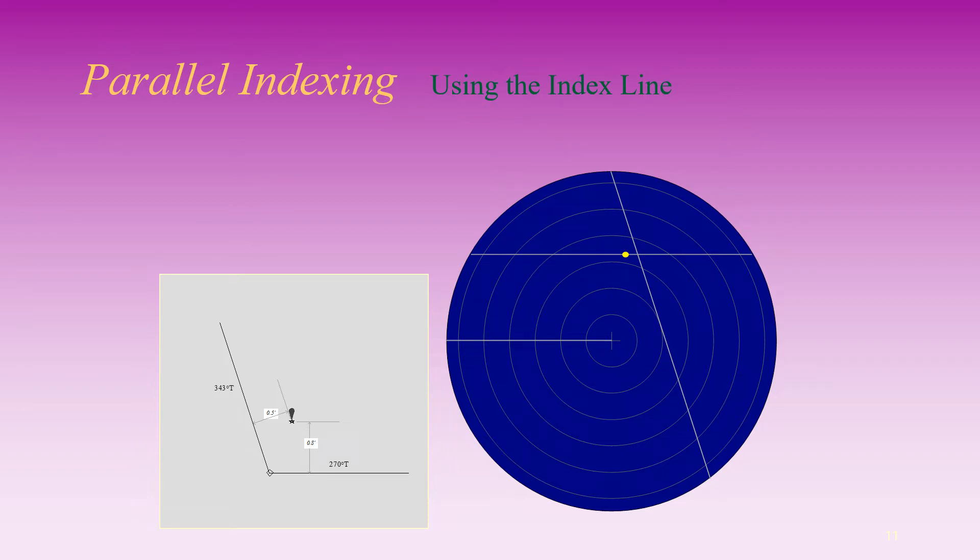We could instead draw a line on the radar display at 0.7 nautical miles and maneuver the vessel so that Shelter Point tracks along that line.